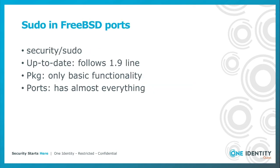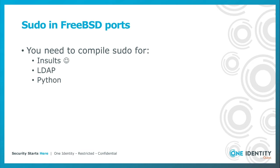You can find sudo under the security directory in FreeBSD ports, and it's pretty much up to date — it follows the 1.9 line of sudo releases. The package has only basic functionality, but most people are okay with this as only advanced features are missing. Ports have practically everything. If you want to use insults, LDAP, or Python, then you need to compile sudo yourself; otherwise you will be fine with binary packages.